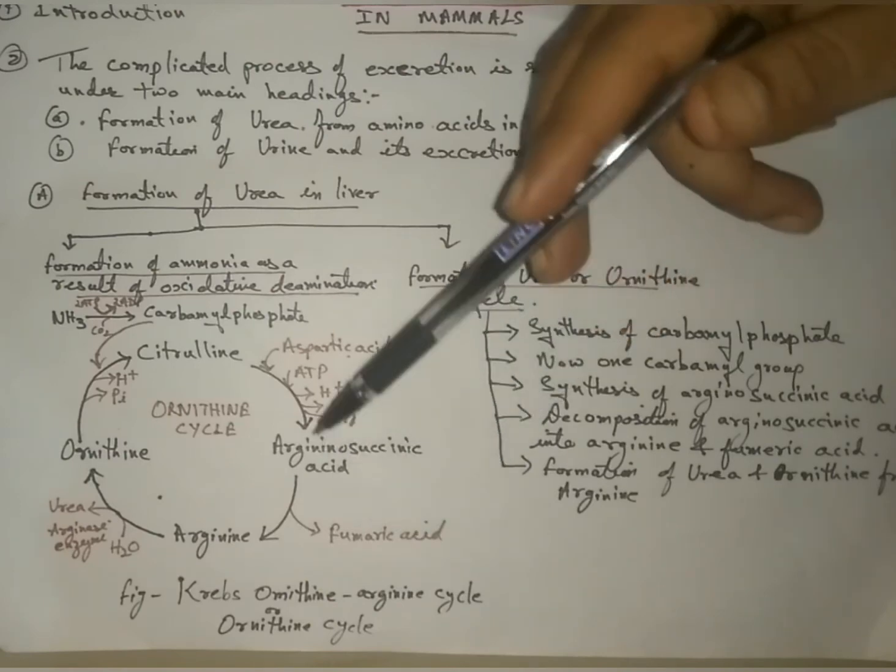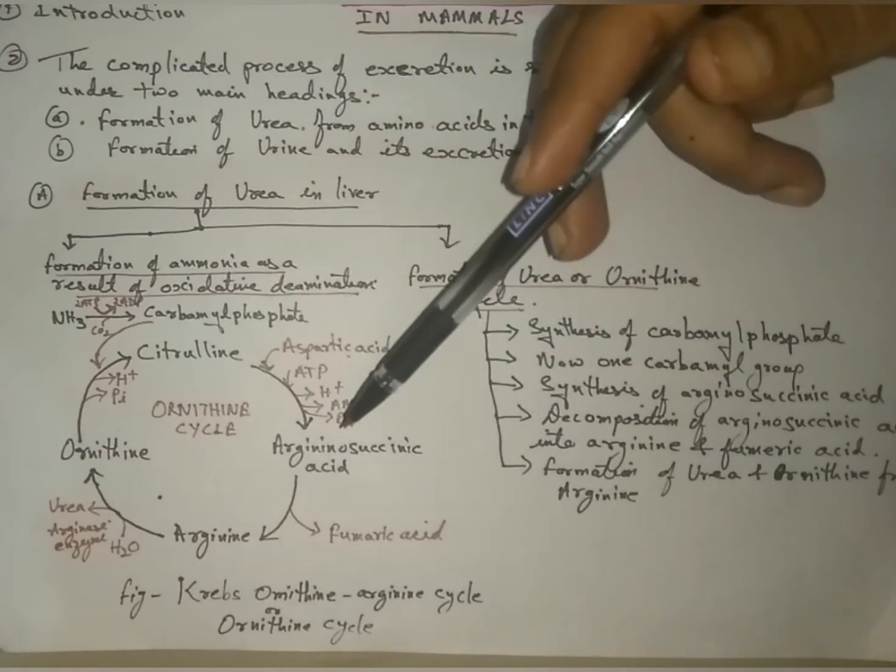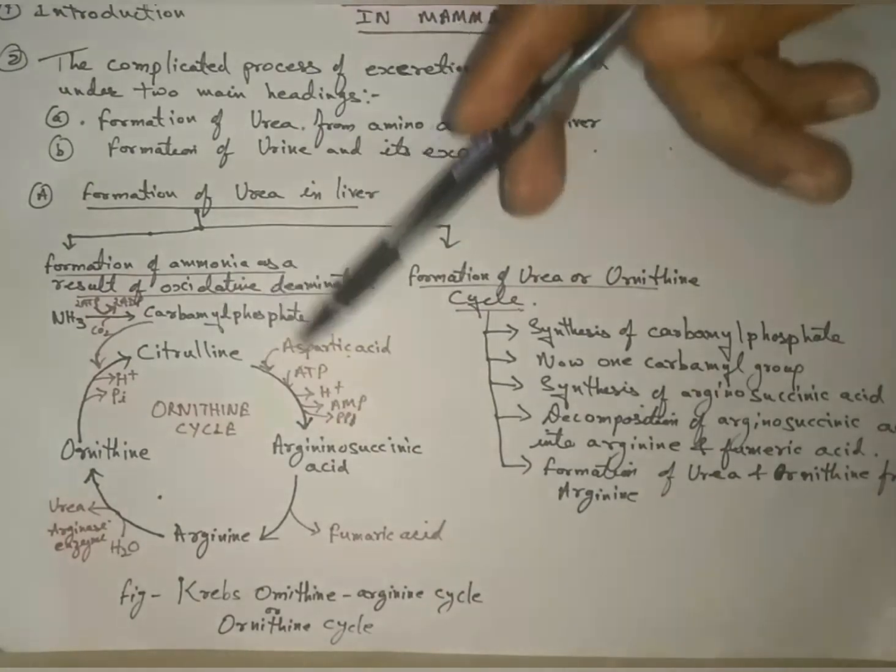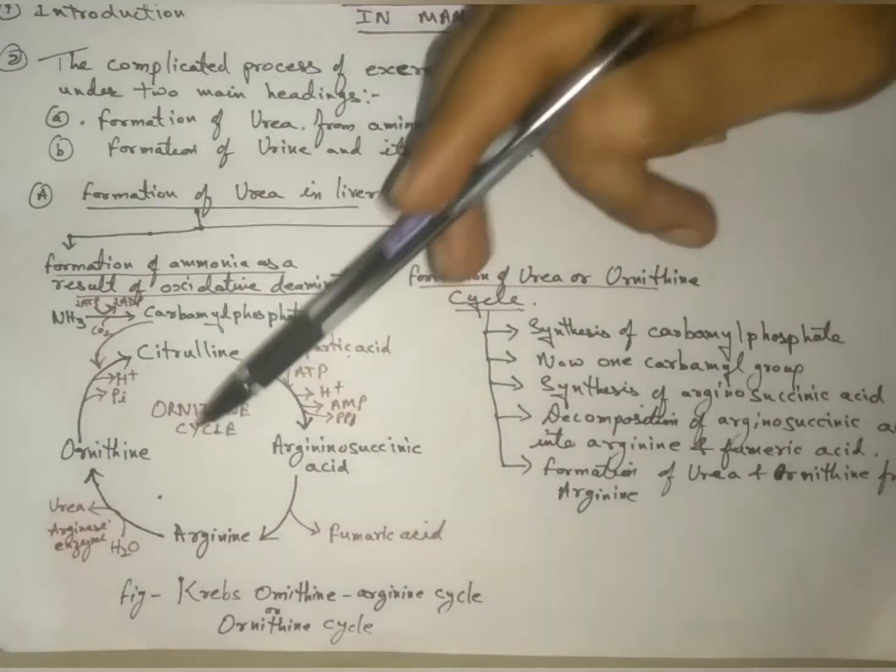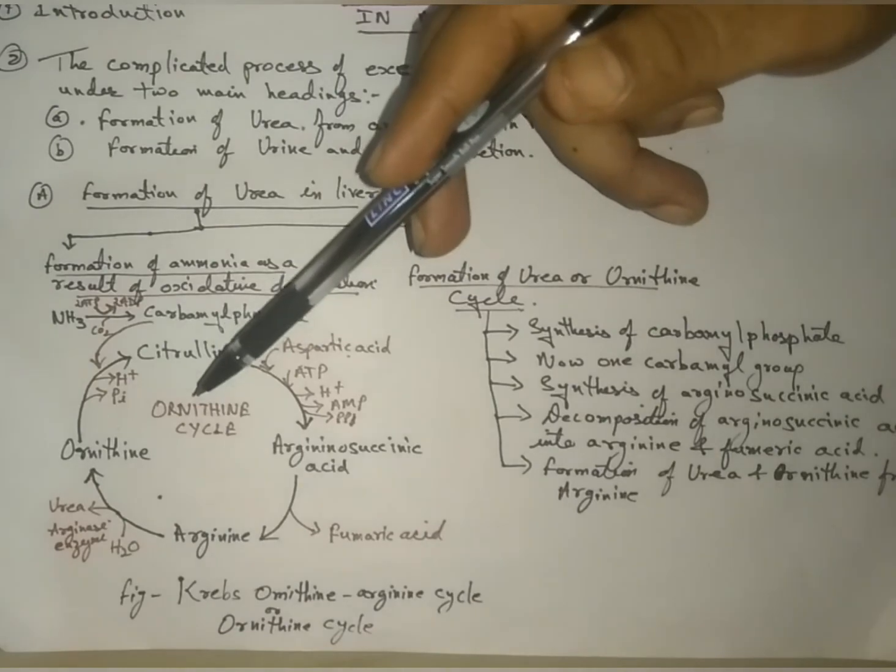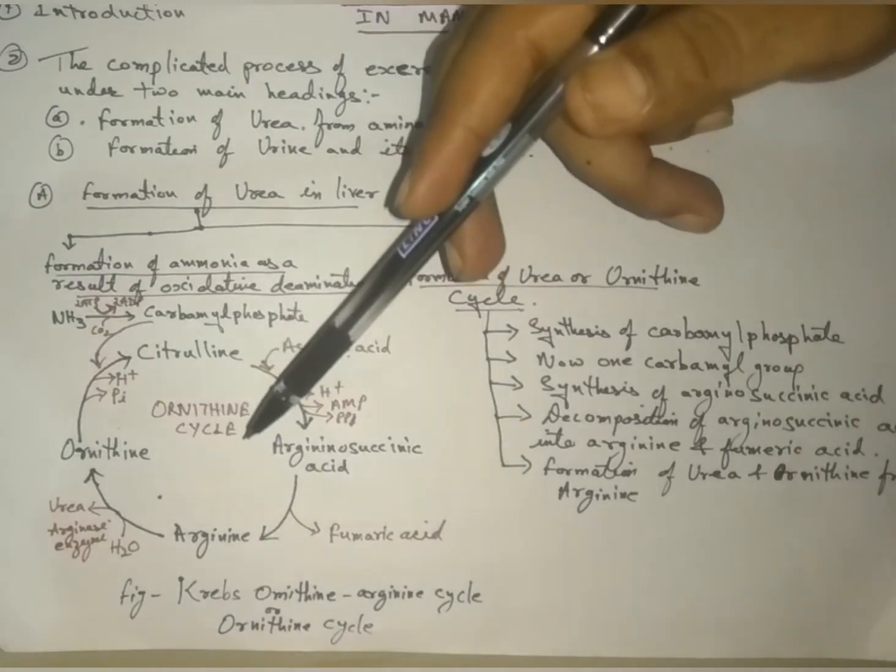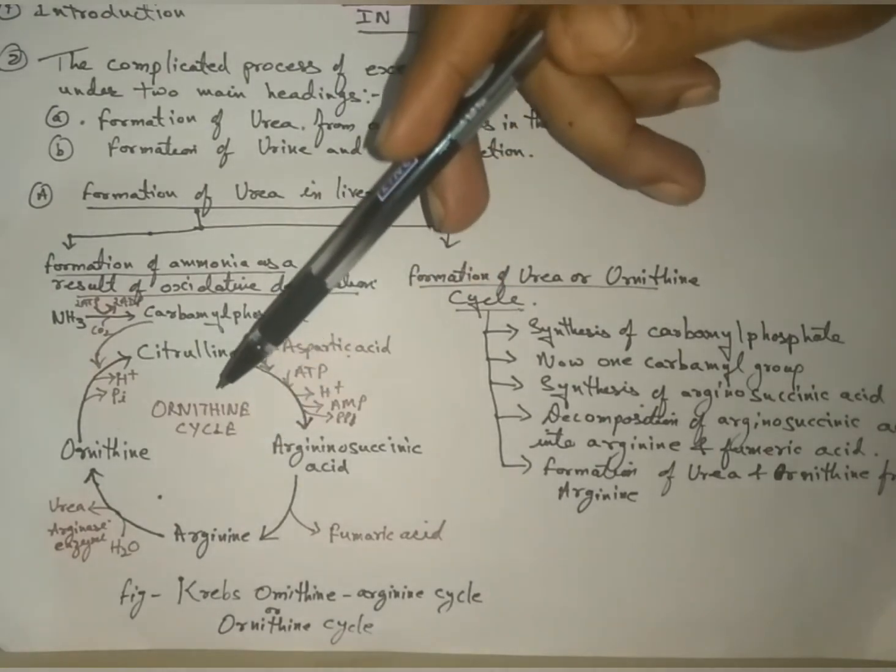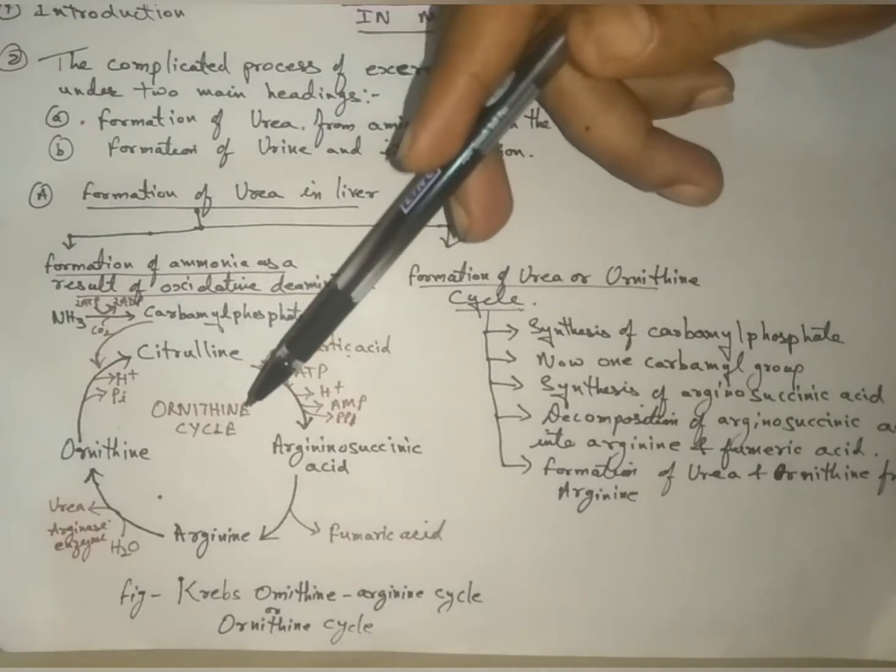Formation of urea and ornithine from arginine: in this last stage, arginine is decomposed into ornithine and urea in the presence of enzyme called arginase.